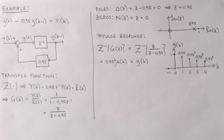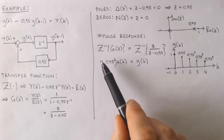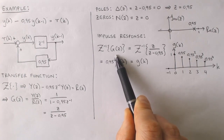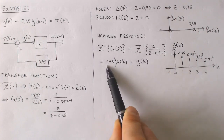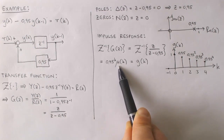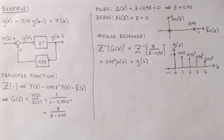Since the transfer function is the z-transform of the impulse response, we can find the impulse response by applying the inverse z-transform to the transfer function. From the z-transform tables we easily find the impulse response to be 0.95 to the k for all non-negative values of k, and the impulse response is plotted here.